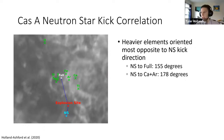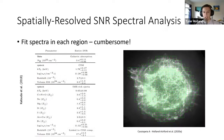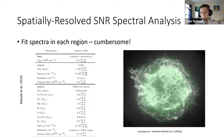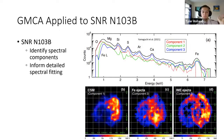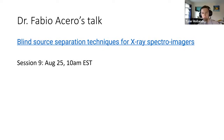Finally, a very promising new method for analyzing supernova remnants is the Generalized Morphological Component Analysis, developed by Adrian Piqueno and Fabio Cerro. Rather than fitting each spatial region individually, it simultaneously fits all pixels in the remnant, extracting common spectral features and weighting each pixel by how much each component is present. This avoids signal loss from splitting into small regions. You should attend the talk on 'Blind Source Separation Techniques for X-ray Spectral Imagers' on August 25th at 10am to hear more.